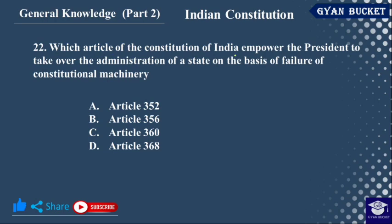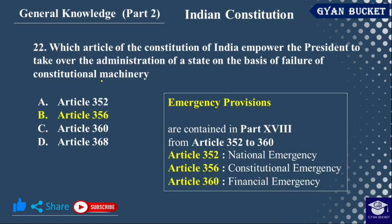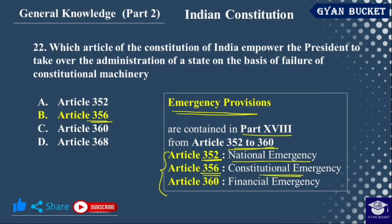Which article of the Constitution of India empowers the President to take over the administration of a state on the basis of failure of constitutional machinery? That is Article 356 — President's Rule. The emergency provisions are: Article 352 (National Emergency), Article 356 (Constitutional/President's Rule), and Article 360 (Financial Emergency).